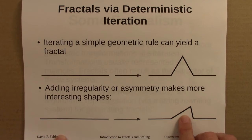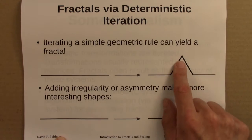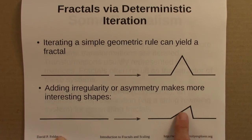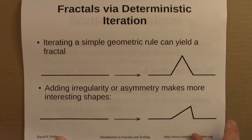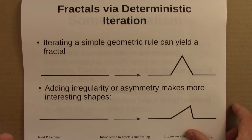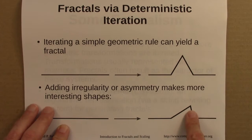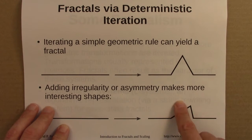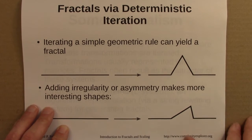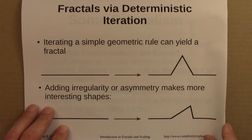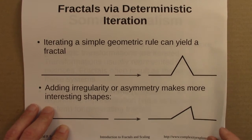If we add in a little bit of irregularity or asymmetry — so maybe it's not an isosceles triangle, it's bent, wiggled off to the side — then we can get some more interesting shapes. Just experimenting with this and slightly more complex rules can give a pretty wide array of different fractals.